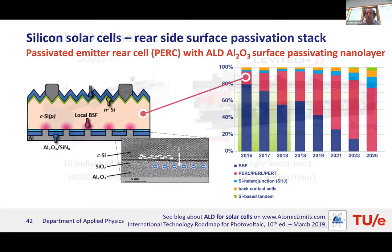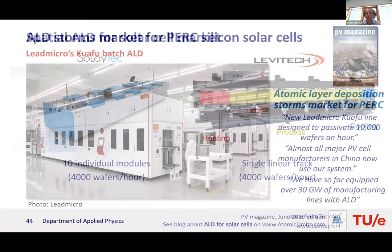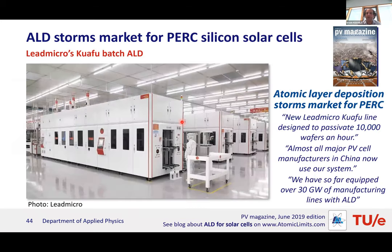Spatial ALD tools were developed that can process 4,000 wafers per hour. However, batch ALD ultimately took over again: Chinese company Lead Micro developed batch ALD furnaces capable of processing 10,000 wafers per hour. A photograph of a silicon solar cell fab shows rows of these ALD tools lined up — representing the current state of the art in solar cell manufacturing.